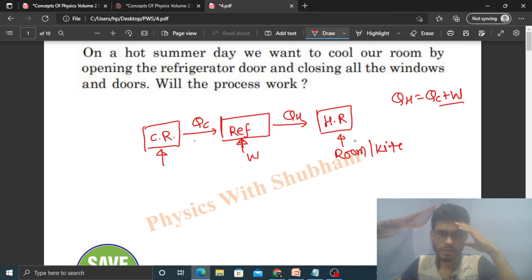If we open the refrigerator door, then the heat that will be absorbed will be QC, and the heat supplied to the room will be QH.